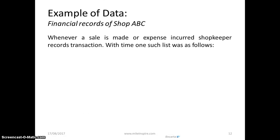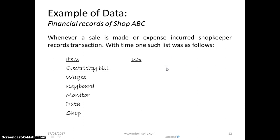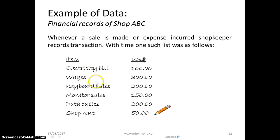Let's look at an example of a financial record of a shop — a cash flow or expense that has been incurred. There is a shopkeeper who records each and every transaction. These transactions include electricity bills, wages to be paid to workers, sales of products such as keyboards, monitor screens, and data cables, and also an expense for rent — with their corresponding figures.